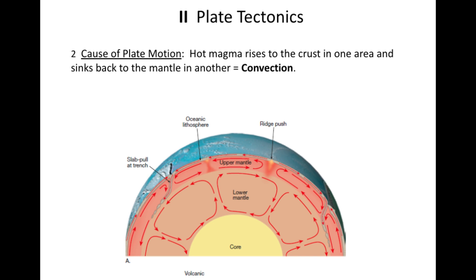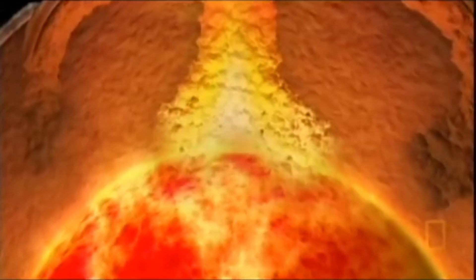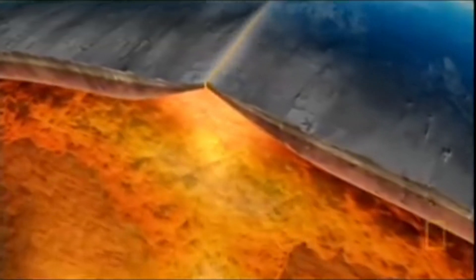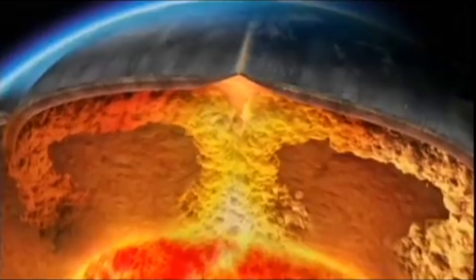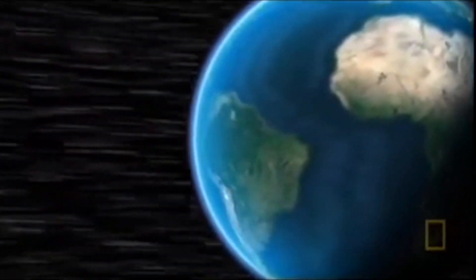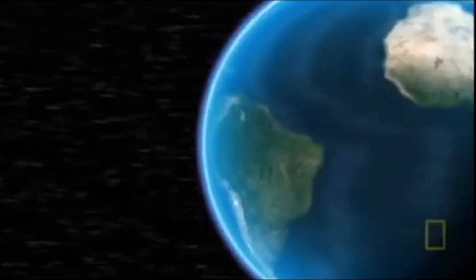Convection in the mantle involves the rising of warm material heated up because it's near the core — it gets hot, expands, and rises to the bottom of the crust. When it hits the bottom of the crust it spreads out sideways. The friction between the convection current and the overlying crust is what causes our plates to move. The current eventually cools, becomes more dense, and sinks back down toward the core to warm up again. This process — convection currents — is really what drives plate motion.